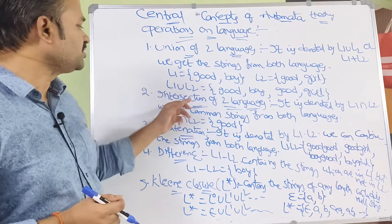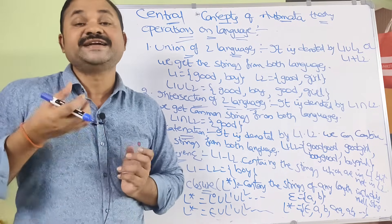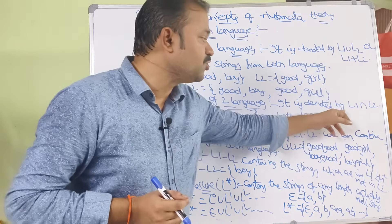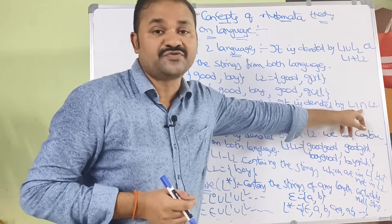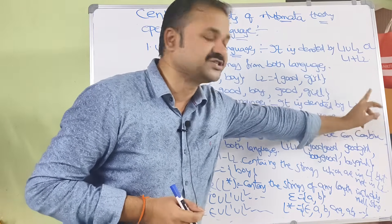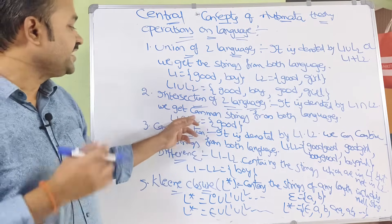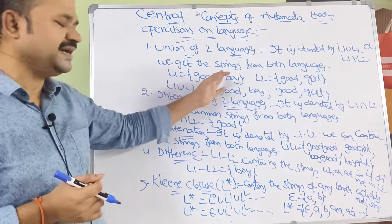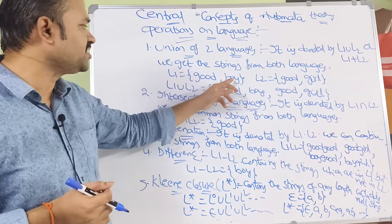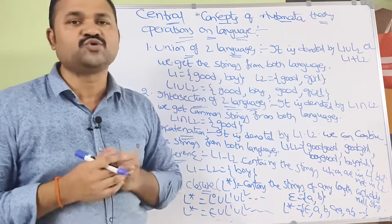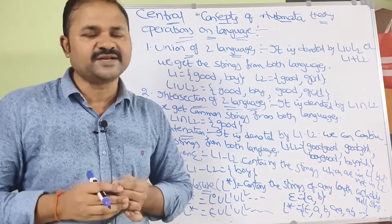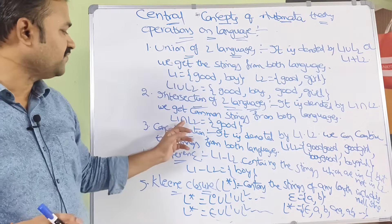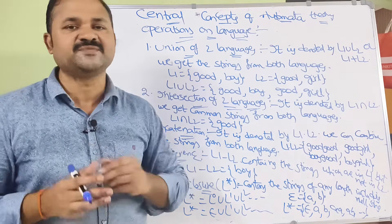Second operation is intersection of two languages, denoted by L1 ∩ L2. We get the common strings from both languages. Using the same example, L1 = {good, boy} and L2 = {good, girl}, the common string is 'good'. So L1 ∩ L2 = {good}.